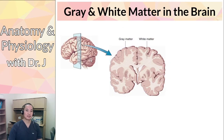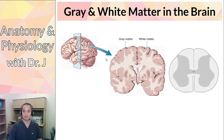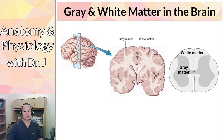There's gray and white matter in the brain. You also have gray and white matter in the spinal cord, but notice how they are arranged differently. In the brain, the gray matter is on the superficial outer surface, whereas the white matter is on the inside. In the spinal cord, the gray matter is on the inside and the white matter is on the outside.